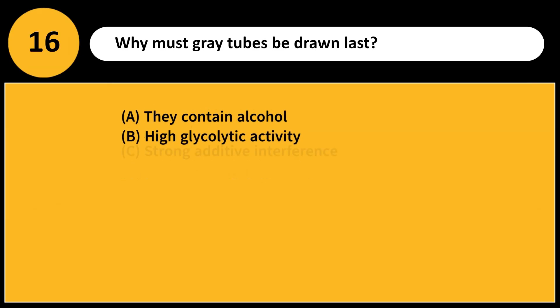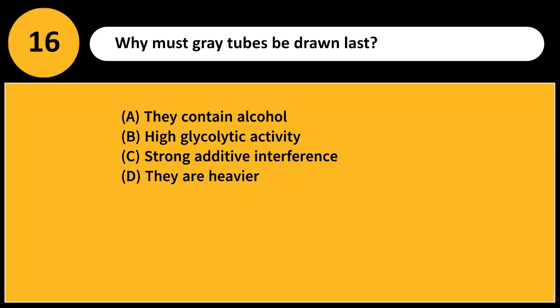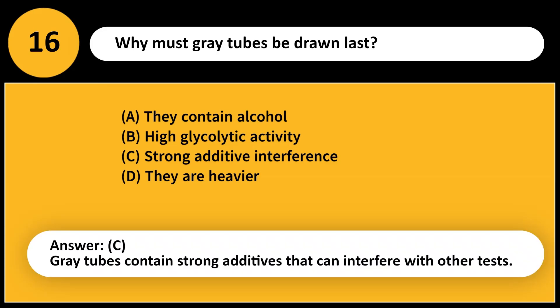Why must gray tubes be drawn last? A. They contain alcohol. B. High glycolytic activity. C. Strong additive interference. D. They are heavier. Answer: C. Gray tubes contain strong additives that can interfere with other tests.